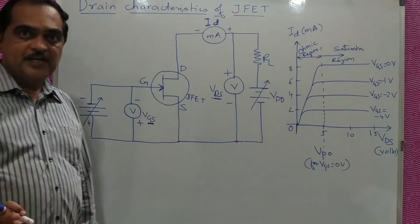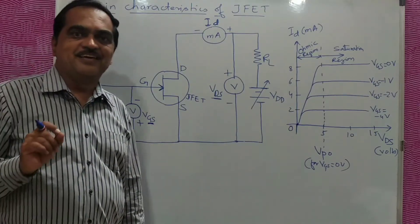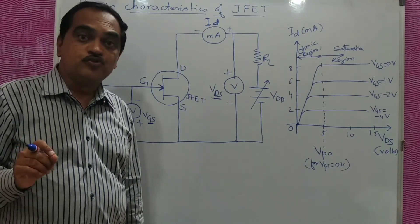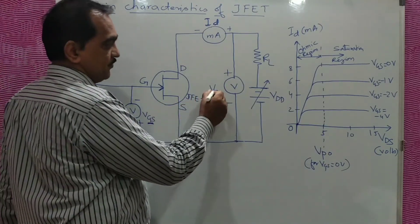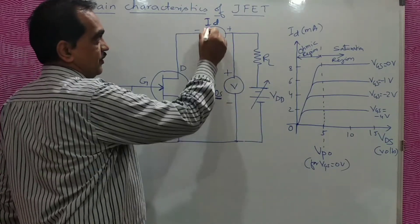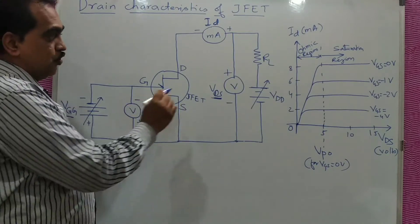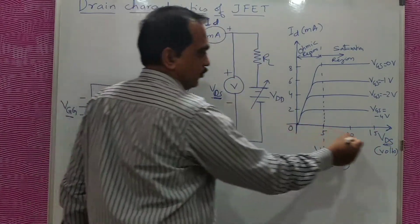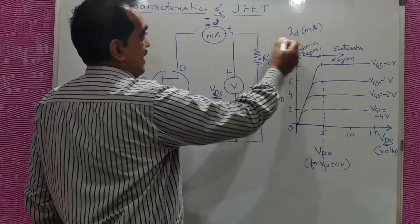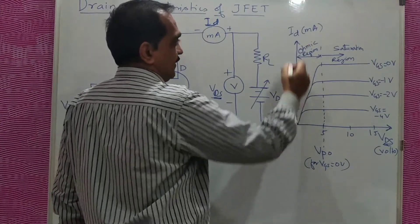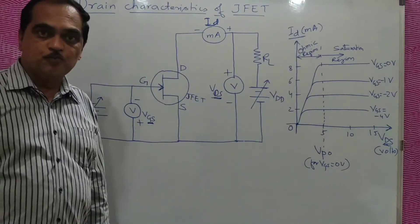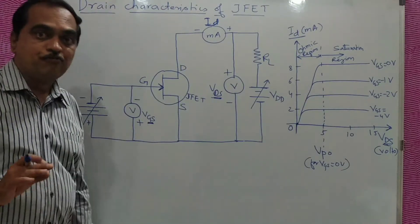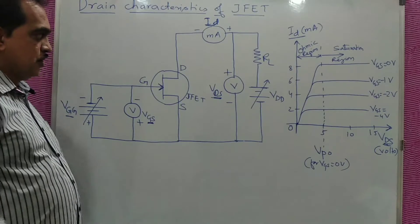Initially when both voltages are 0, the current will be 0. Drain characteristics are like output characteristics — a graph between output voltage and output current for a constant input voltage. Output voltage is VDS on the x-axis and output current ID on the y-axis, for various values of input voltage VGS.